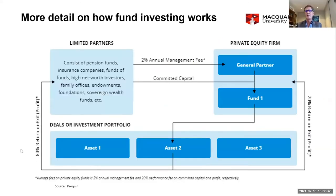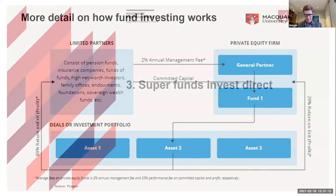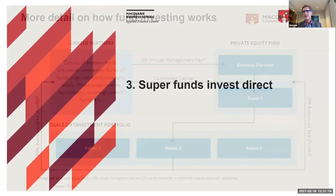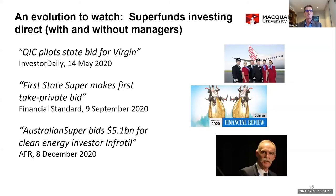The next slide shows more detail on how funds are currently investing — it shows a management fee paid to general partners, and then with a hurdle rate, 20% of gains going to the managers and 80% back to the investors.